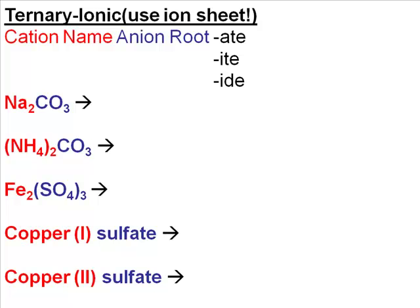To write the formula or the name for these, you'll want to use the ion sheet that was provided in your lab manual. This ion sheet might be on the back of your periodic table, or it might be at the back of your lab manual. This will always be provided on any test or quiz. So this table here will help us with the names or formulas for ionic compounds that are called ternary.